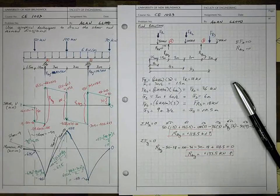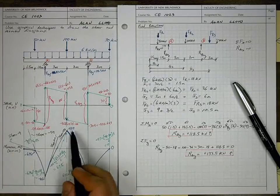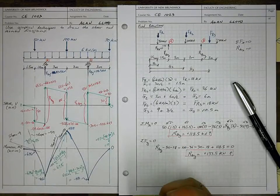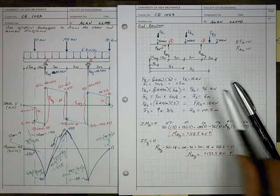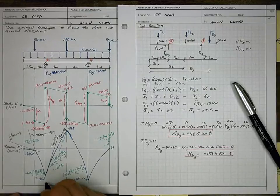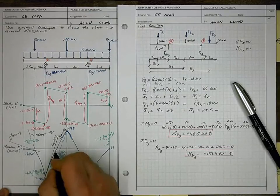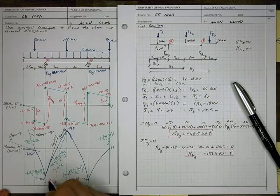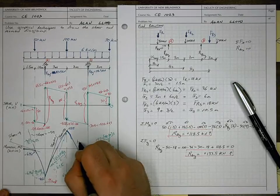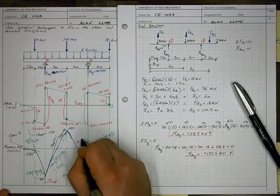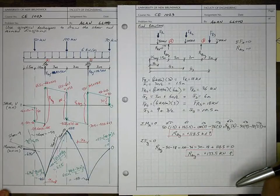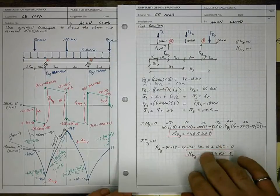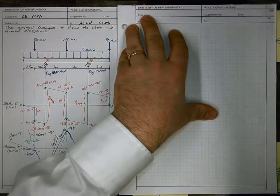We've finished our moment diagram with moments at discrete locations: 0, minus 6.75, minus 102, 67.5, minus 117, and 0. It might be interesting to find a couple of additional values. Let's find x1, the distance from support A to where moment is zero, and x2, the distance from support B to where moment is zero.